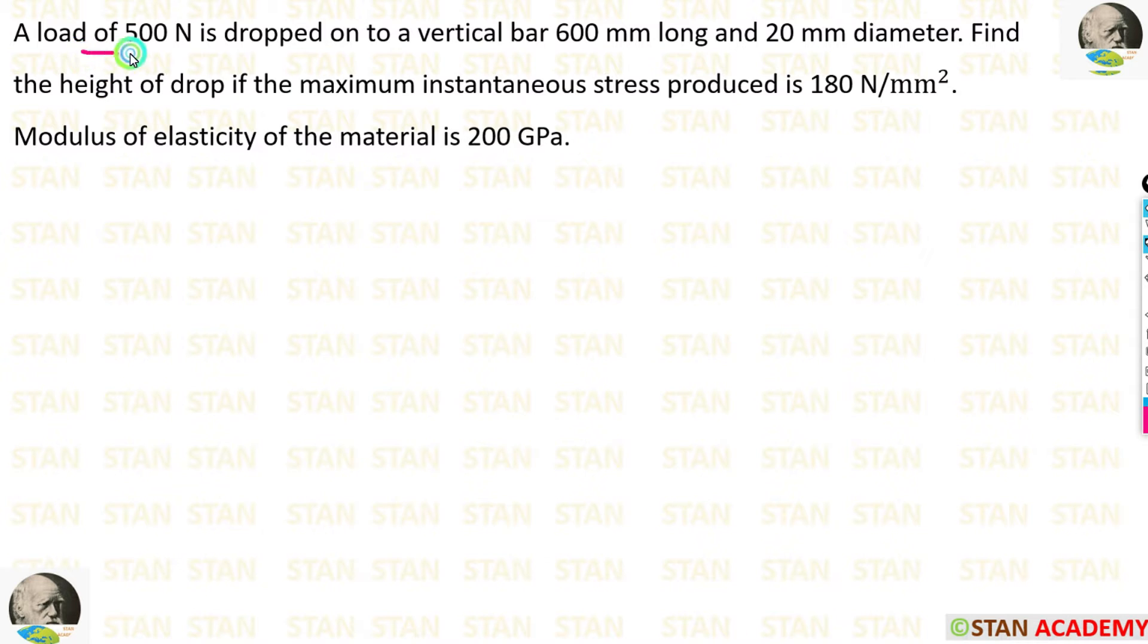A load of 500 Newton is dropped onto a vertical bar 600 mm long and 20 mm diameter. Find the height of the drop if the maximum instantaneous stress produced is 180 Newton per mm square. Modulus of elasticity of the material is 200 GPa.